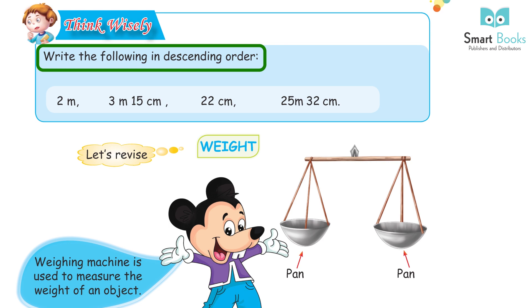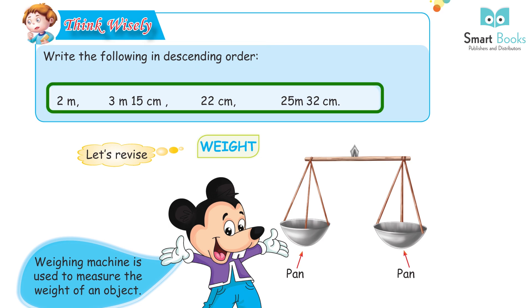Write the following in descending order: 2 m, 3 m, 15 cm, 22 cm, 25 m, 32 cm. Answer: 25 m, 3 m, 2 m, 32 cm, 22 cm, 15 cm.